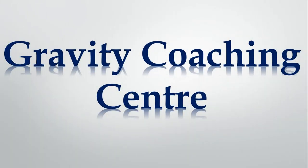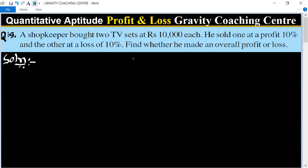Welcome to our channel Gravity Coaching Centre. Quantitative Aptitude chapter Profit and Loss, question number 19. A shopkeeper bought two TV sets at rupees 10,000 each.